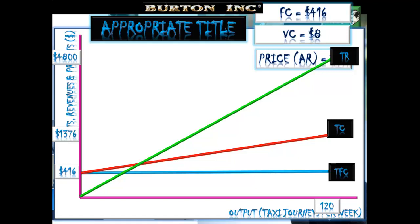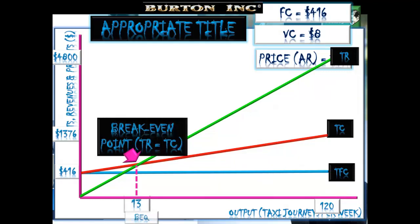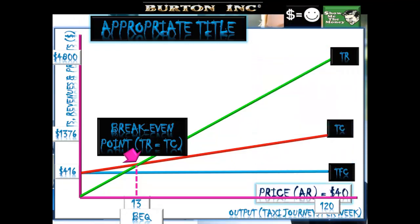This is what every breakeven chart needs to look like: the scales, the labeling, three curves — total fixed cost as a horizontal line, total cost always starting where total fixed cost meets the Y-axis, and total revenue always starting at the origin. A top exam hint: before you draw in your breakeven point and label it on the X-axis, go away and do a calculation to determine exactly what the breakeven quantity is. Don't just try to read it off the chart — do the calculation so you know for sure.